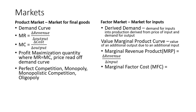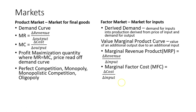We also look at something called marginal factor cost. Marginal factor cost is simply the change in total cost divided by the change in input. Marginal revenue product is the change in revenue due to a change in input — I hire one more worker, what does that worker make me? And I compare that to my marginal factor cost, which is the change in total cost divided by the change in input — so if I hire one more worker, what is that additional worker going to cost me?